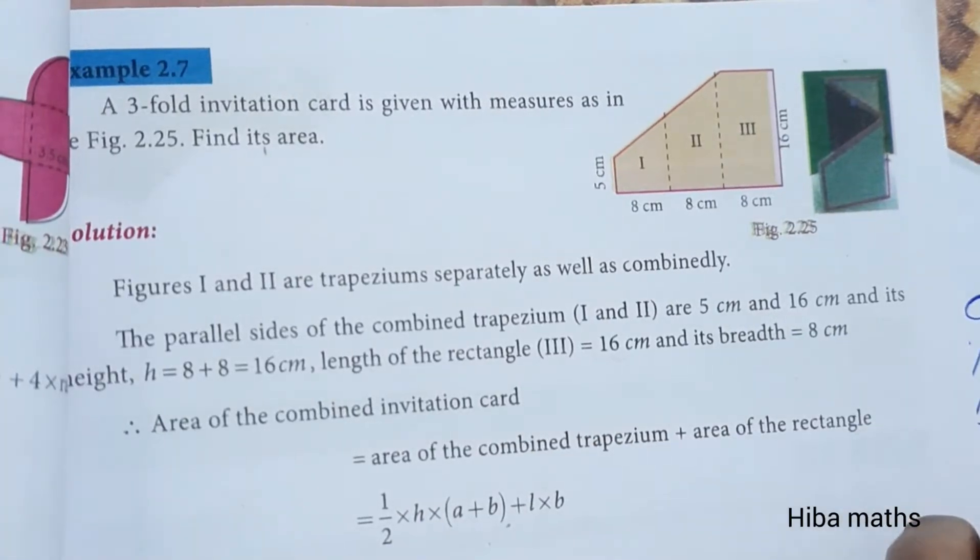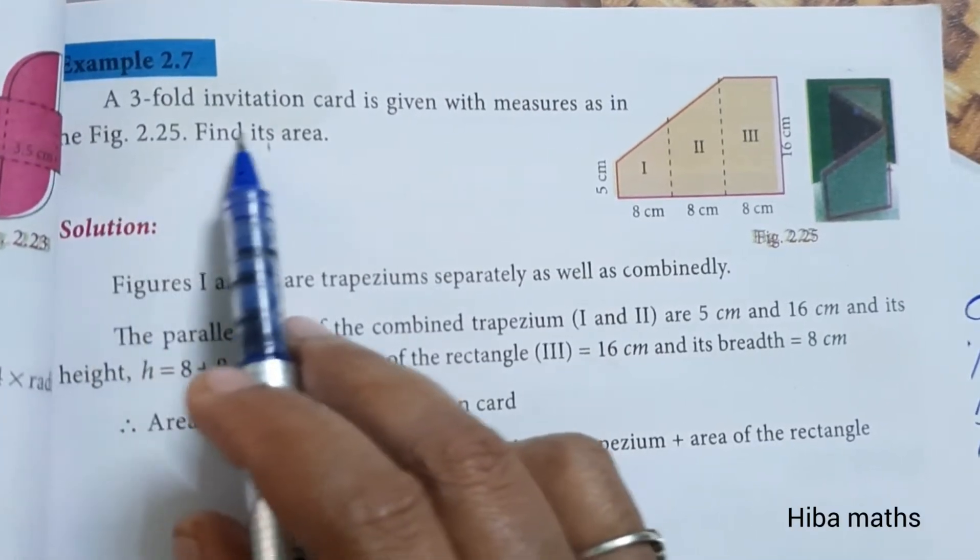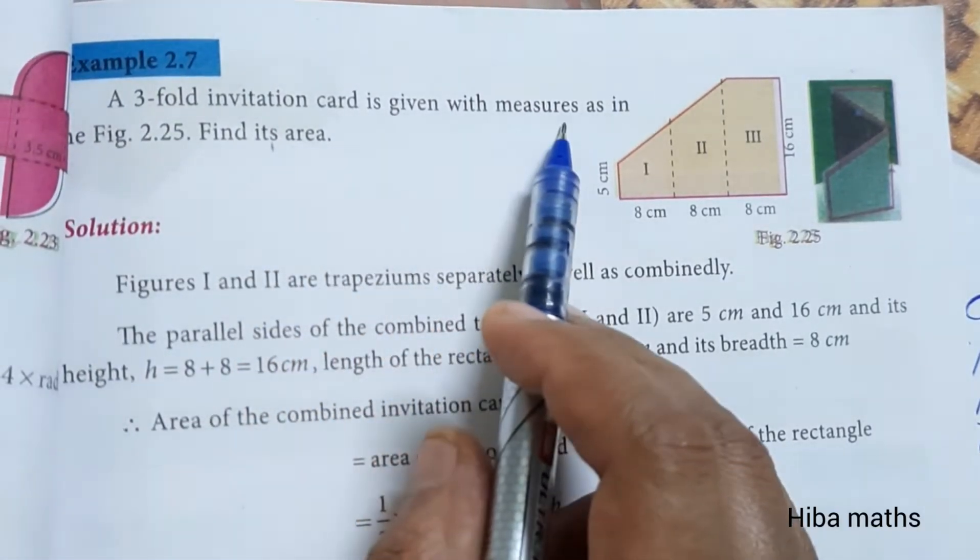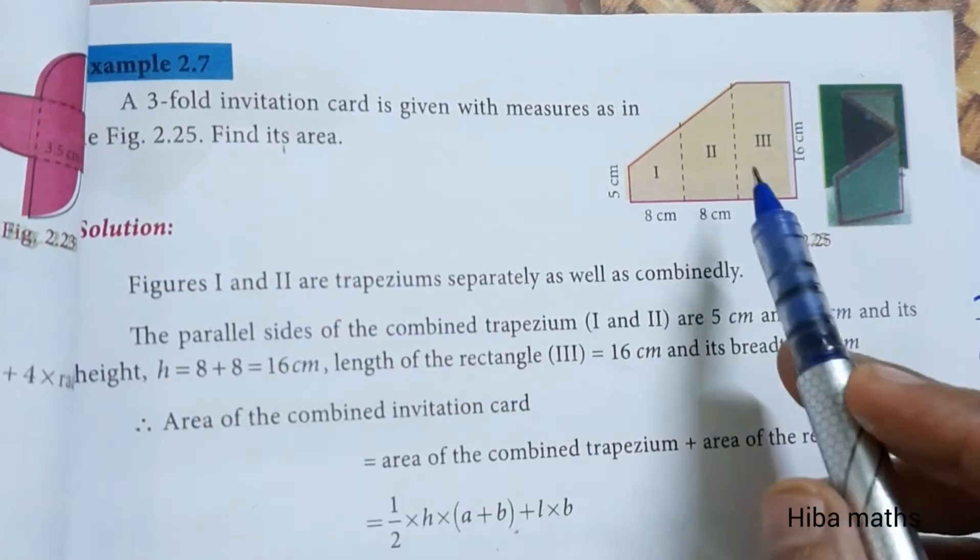Hello students, welcome to Hibamax. It's 8th Maths Chapter 2 Example 2.7. A 3-fold invitation card is given with measures as in the figure 2.25. Find its area.